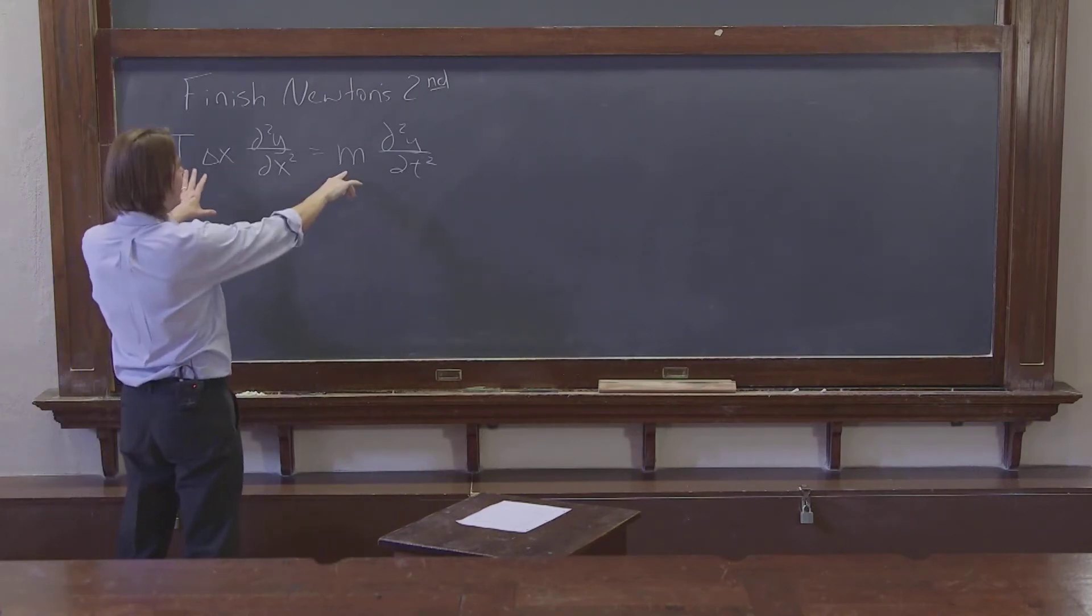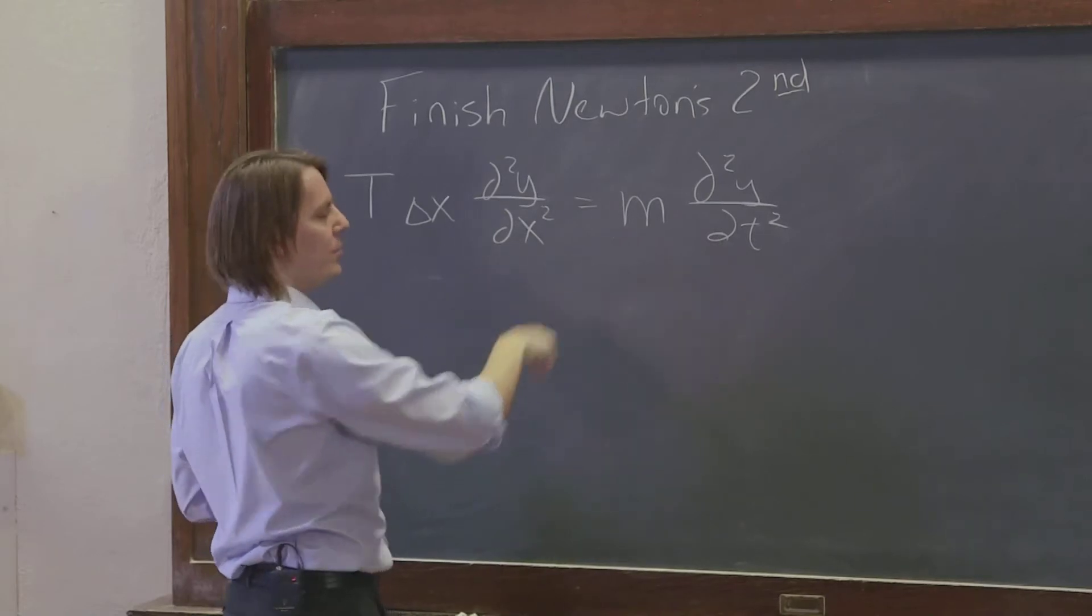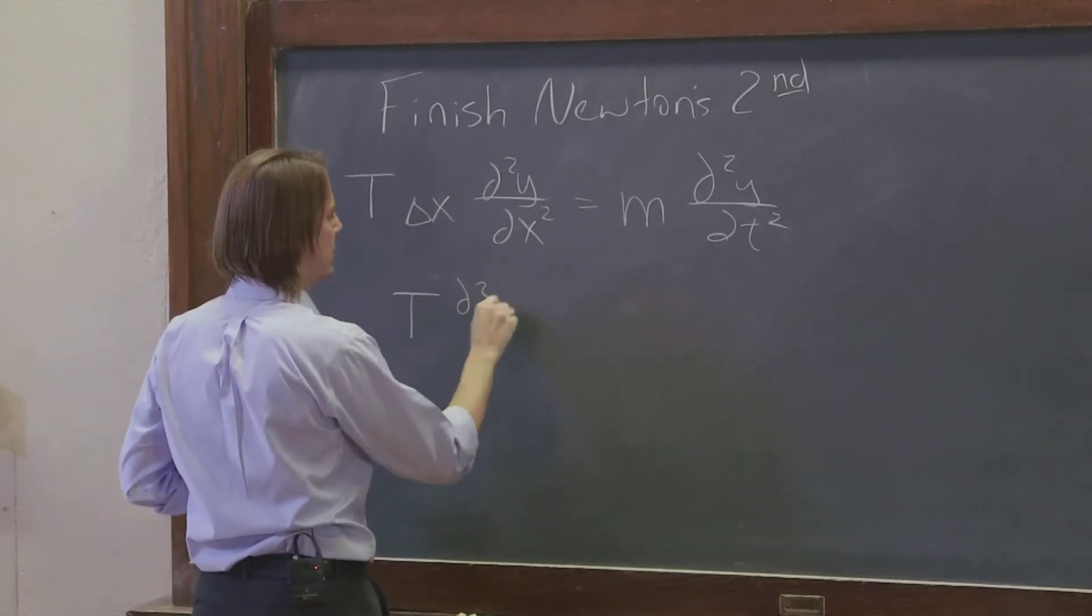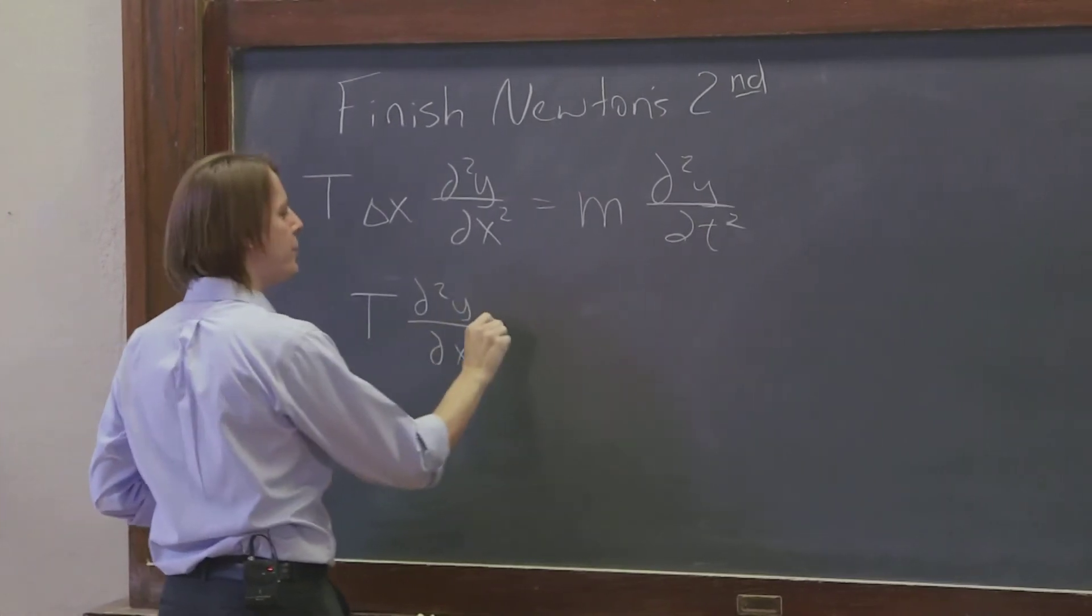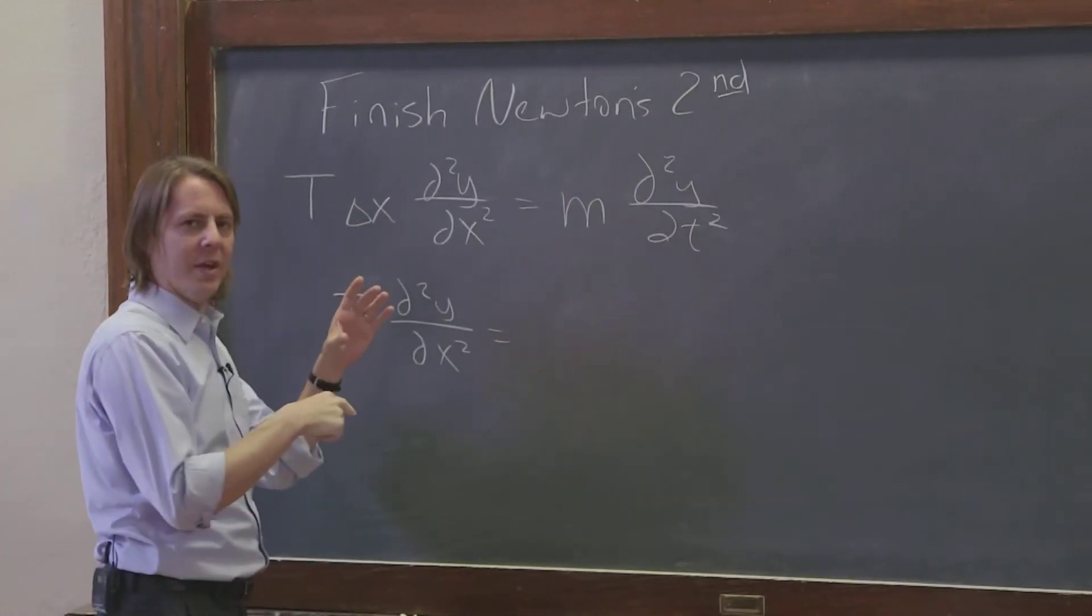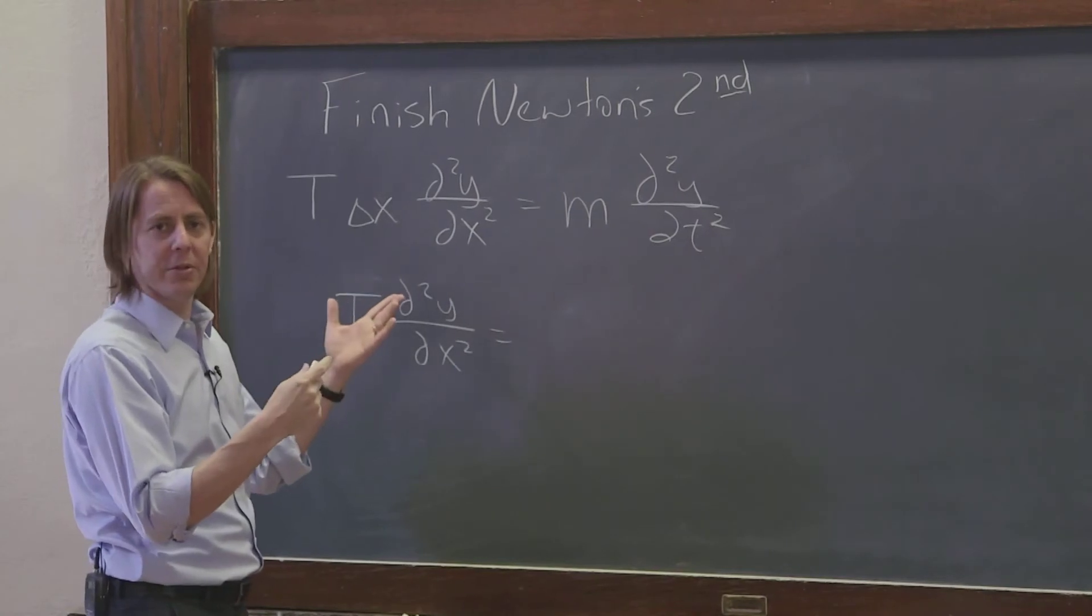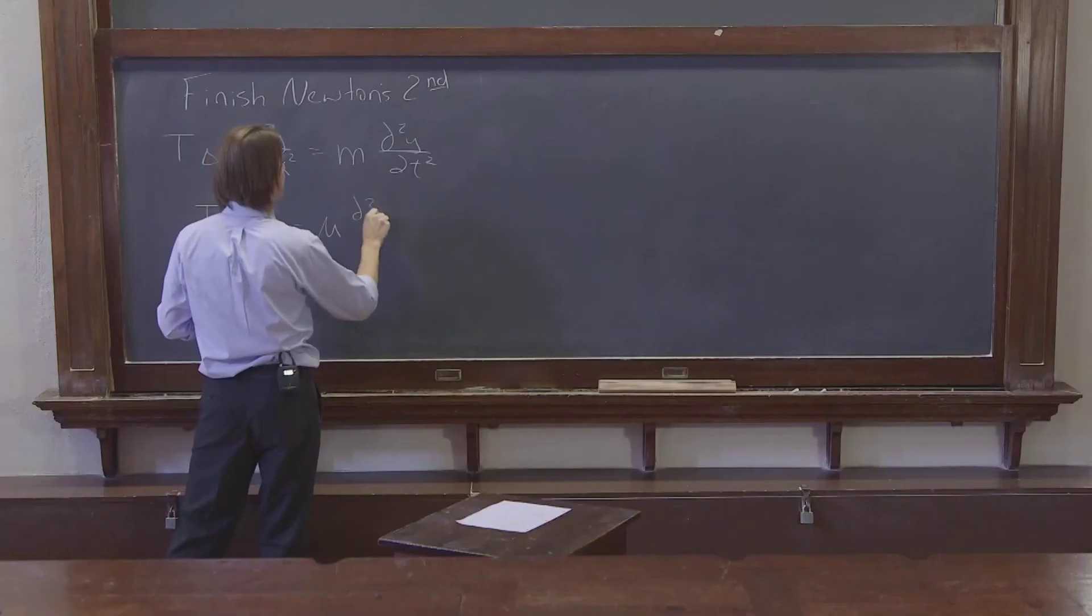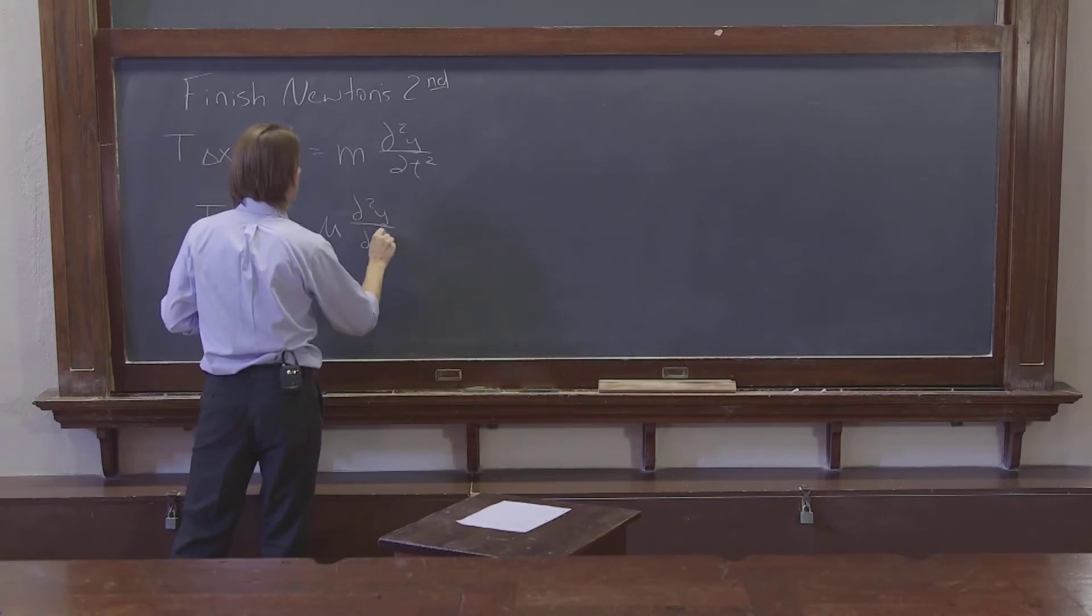So we have an opportunity here to get back to our fundamental properties of the string by bringing this delta x under the mass, because that would be T d²y/dx², and the mass over delta x, that's the mass per unit length for this little piece. So we could write that as mu, and then d²y/dt².